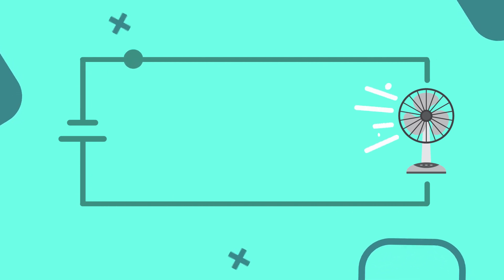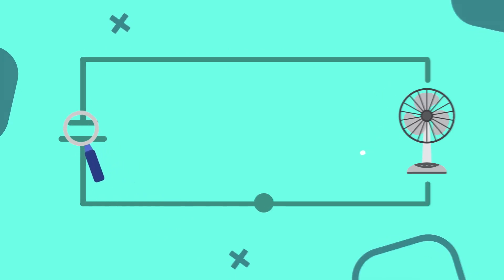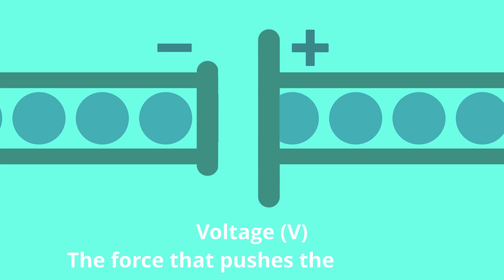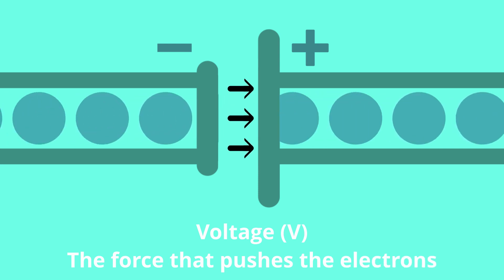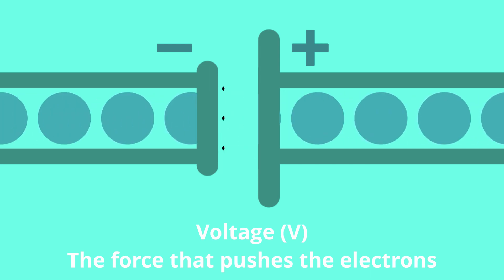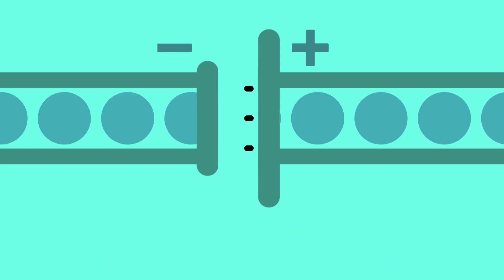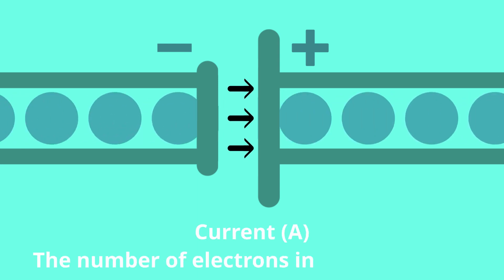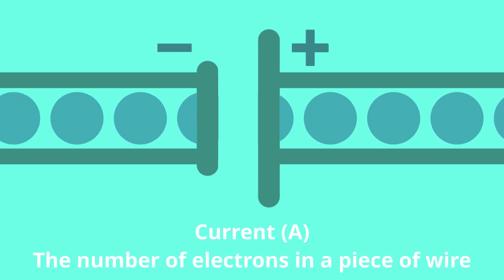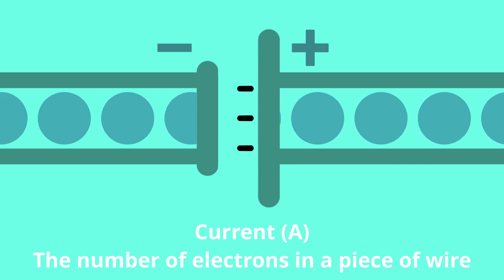This flow of energy is possible due to the movement of negatively charged electrons inside the wires. The first important measure in a circuit like this is the voltage of the battery. In simplified terms, voltage is the force that pushes those electrons out of the battery and back again, measured in volts or the letter V. The other important measure is current — the number of electrons pushed through a piece of wire at a given moment, represented with the letter I and measured in amps or the letter A.